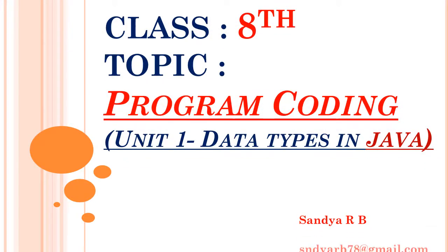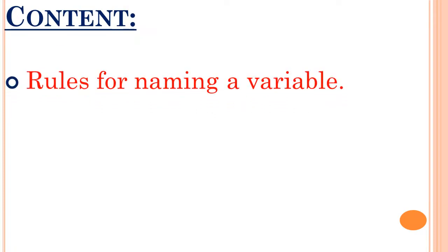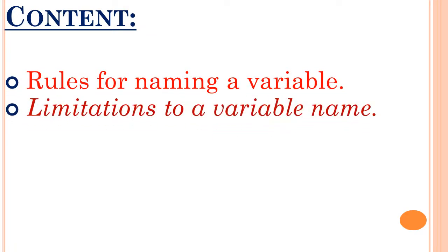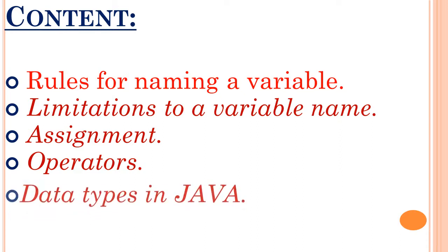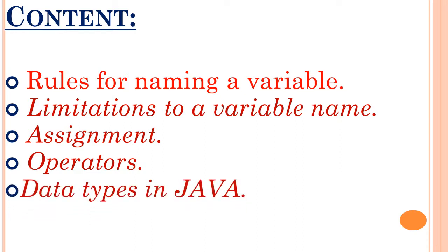Hello everyone, welcome back to computer class. Today I am going to continue the remaining part from unit 1, chapter number 4, that is data types in Java. The contents are: rules for naming a variable, limitations to a variable name, assignment and operators, and data types in Java.